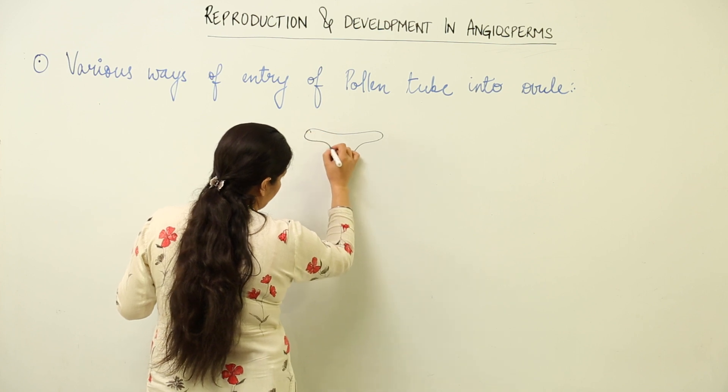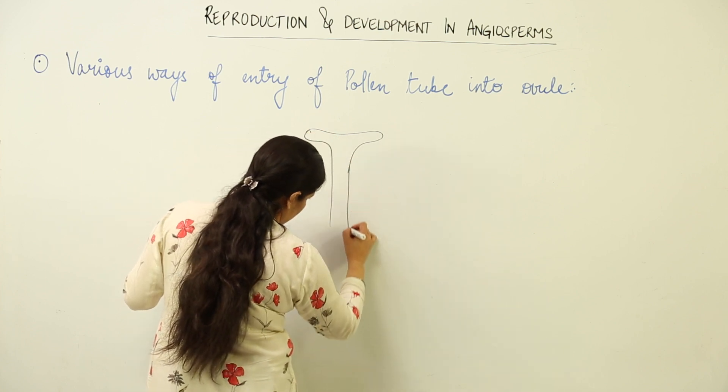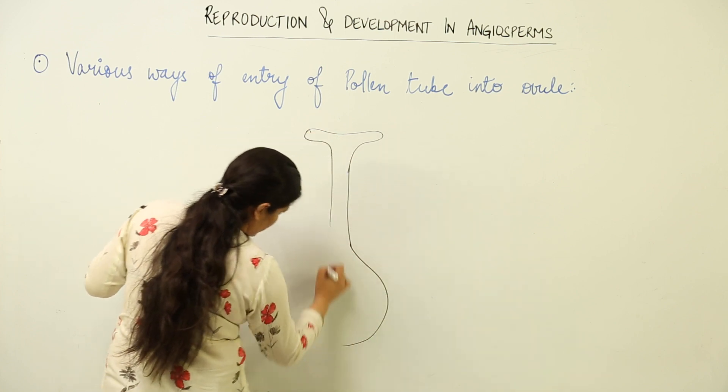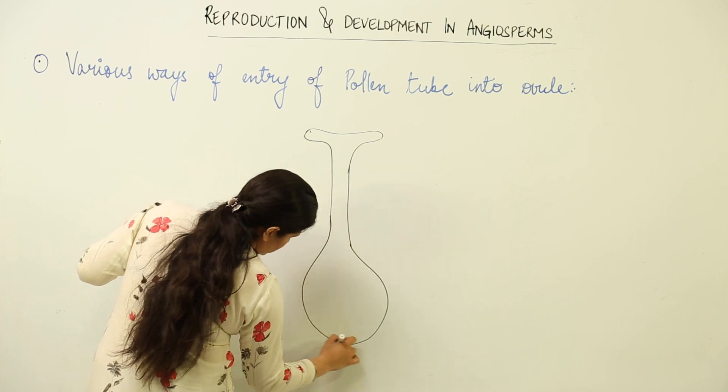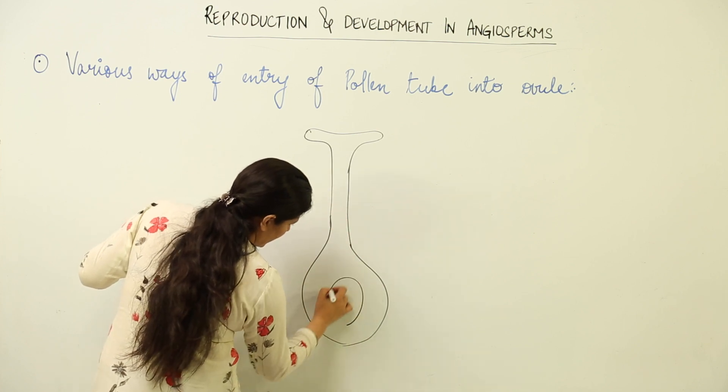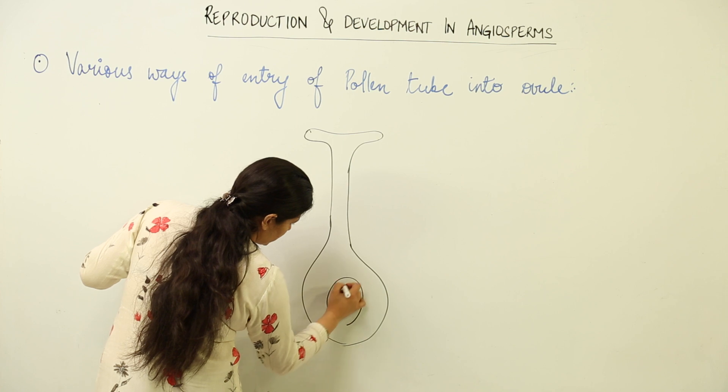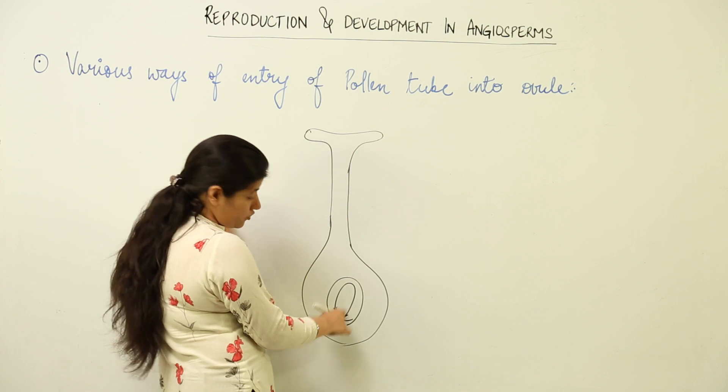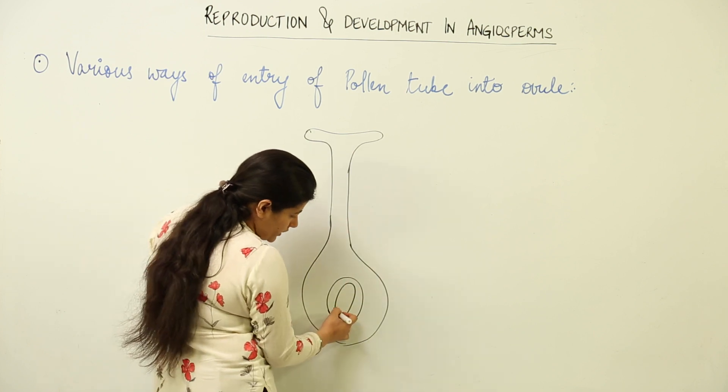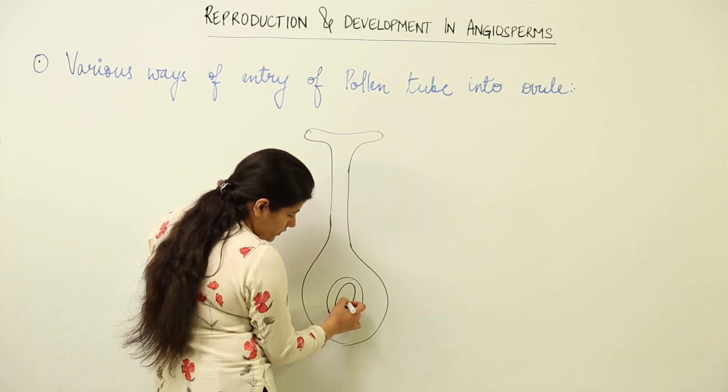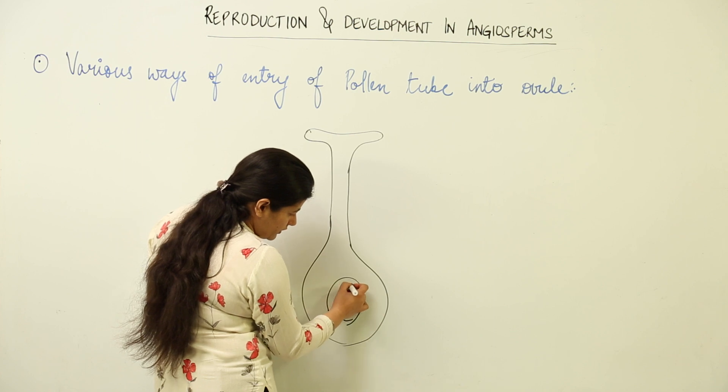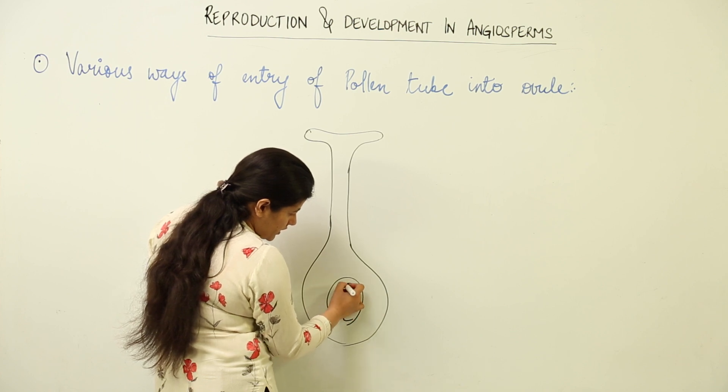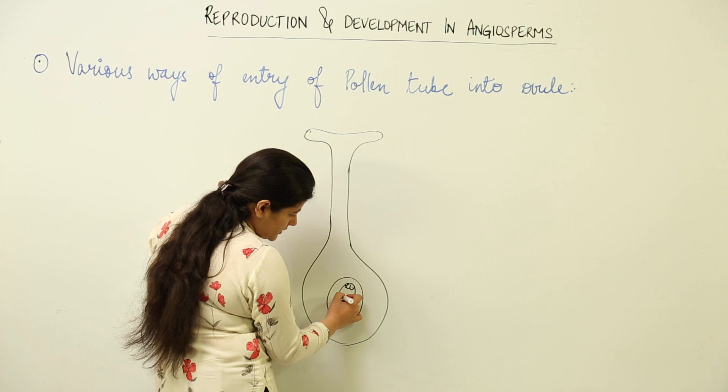This is the ovary. Here we are having an ovule. Supposedly these are the integuments. An anatropous ovule. This would be micropyle, this would be chalaza. Here you have synergids and the egg, and here you have antipodals. There lies the central cell with two polar nuclei. The simplest representation.